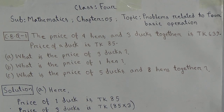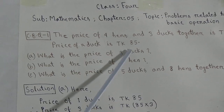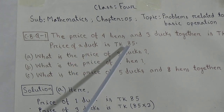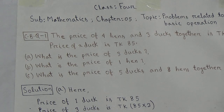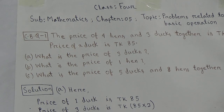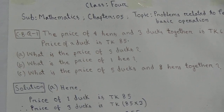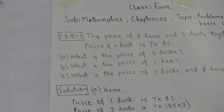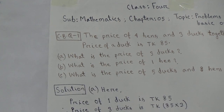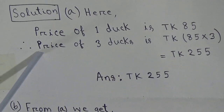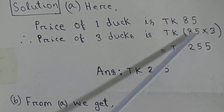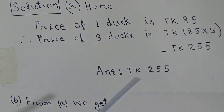At first, we will solve question A: What is the price of three ducks? The price of one duck is given, which is TK85. One duck's price is TK85, another duck's price is TK85, and another duck's price is TK85. So the total price of three ducks will be TK85 plus TK85 plus TK85. But you know that multiplication is the short process of addition. So if we multiply 85 by 3, we can easily solve the problem. The price of one duck is TK85. Therefore, the price of three ducks is TK85 × 3. Now we will multiply TK85 by 3.